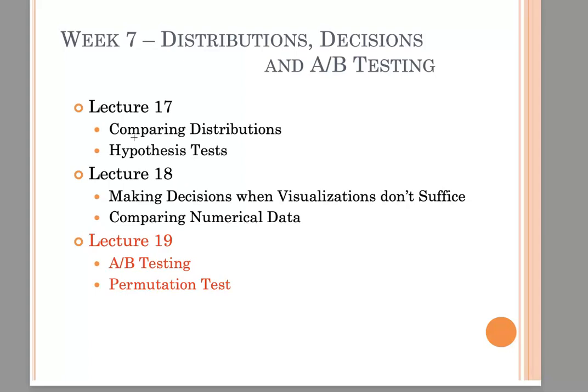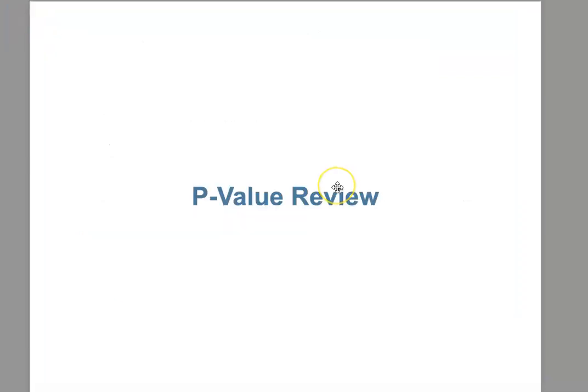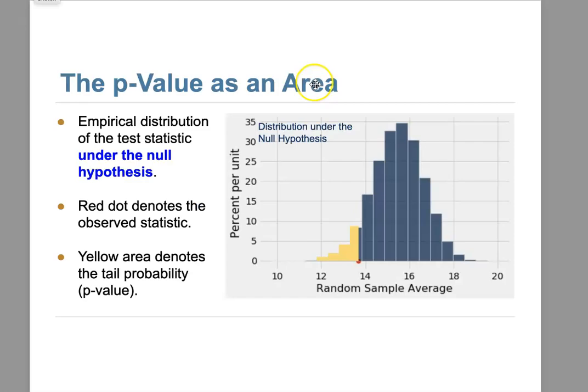In today's lecture we will show you another hypothesis testing we call A/B testing, and we will also talk about what is the permutation test. Before we start talking about A/B testing, let's do a quick review about the p-value we introduced in the previous lecture. The p-value actually is an area.